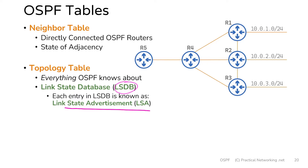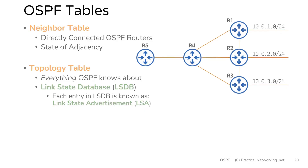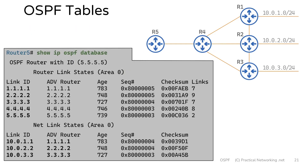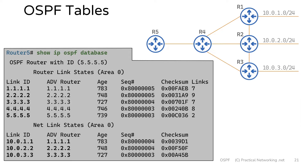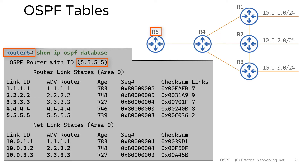A link state database is full of link state advertisements. I'm about to show you the link state database for router 5 in this topology. Don't let that intimidate you — we're going to unpack it in more detail later on throughout this course. To view a topology table on a Cisco router, you would use the command show IP OSPF database. Router 5 believes its own router ID to be 5.5.5.5 — a common pattern where the router ID is simply the router number repeated.